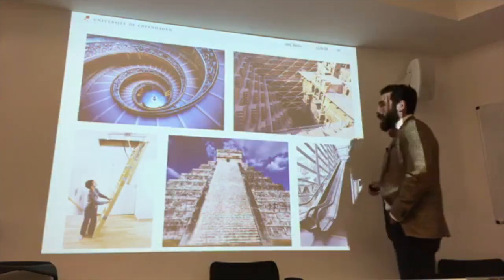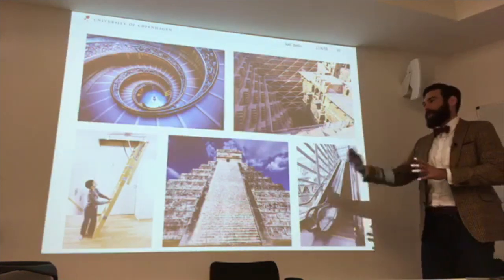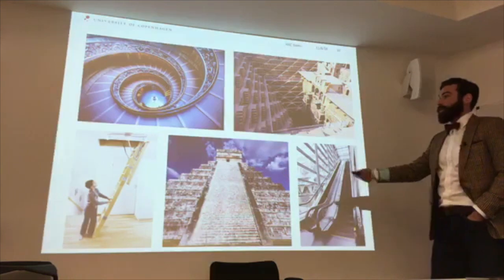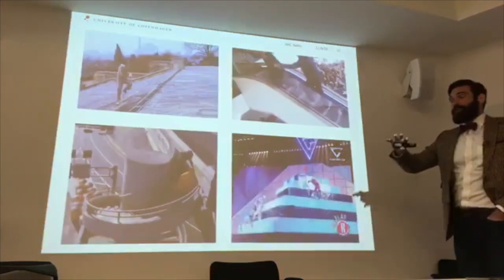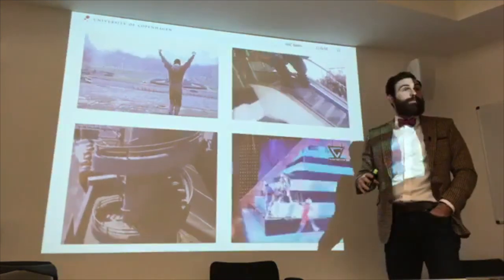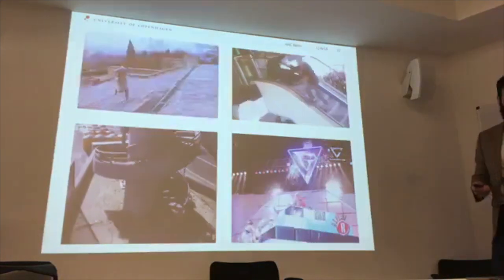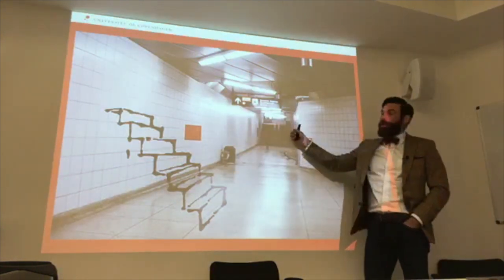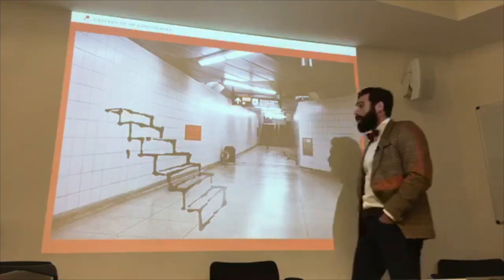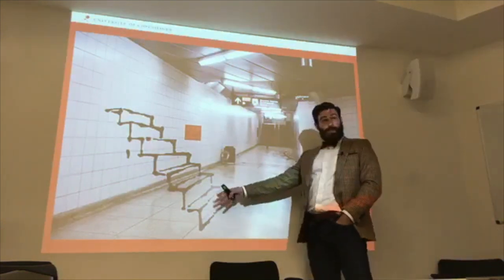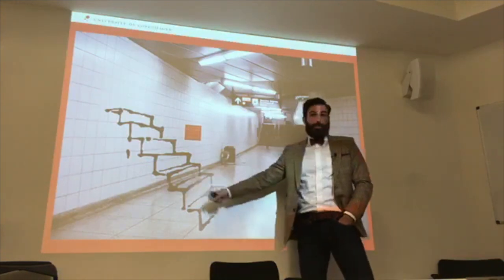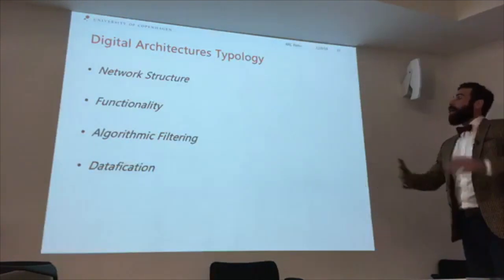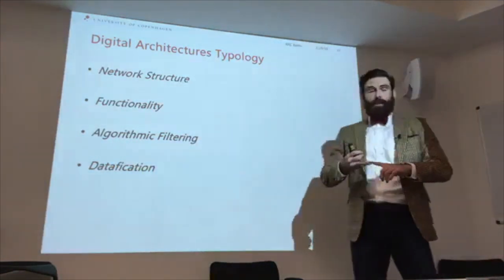Getting to the typology with a stairs analogy: stairs are a technology. There are different types, and if we want to compare across them, we can think about their form, function, and how users interact with them. Even though technology is designed for one thing, it can be used in any number of ways — we can't predict user behavior with full certainty. My typology has four broader categories: network structure, functionality, algorithmic filtering, and datification. Network structure covers the criteria governing connections between accounts, with sub-properties of searchability, connectivity, and privacy.